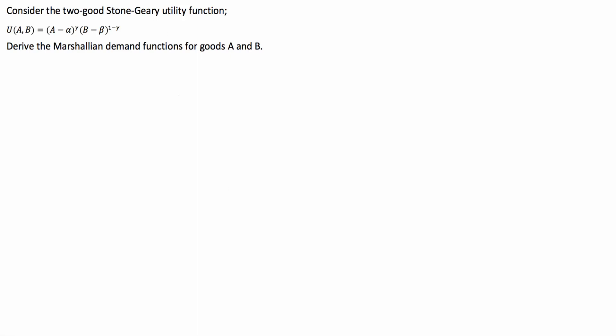G'day guys, we've got an economics problem for you today. We've got to consider a two-good Stone-Geary utility function U of A and B, which is given here. From that, we have to derive the Marshallian demand functions for both good A and good B.